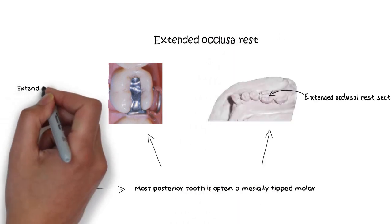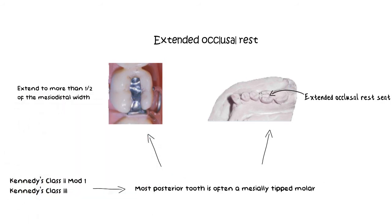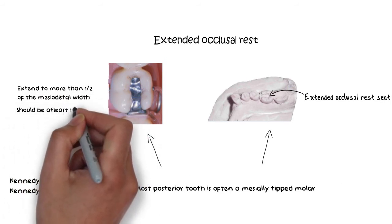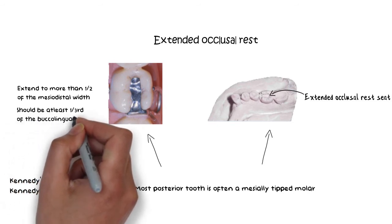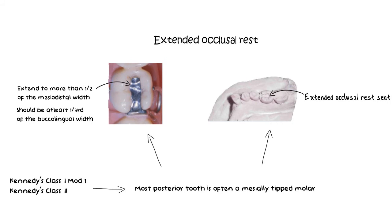This type of rest extends to more than one half of the total mesiodistal width of the tooth and also should be one third the thickness of the buccolingual width of the tooth. Meaning, in length it should be one half of the tooth while in width it should be one third of the tooth. This will allow the rest to direct the forces more along the long axis and help to minimize the further tipping of the abutment.